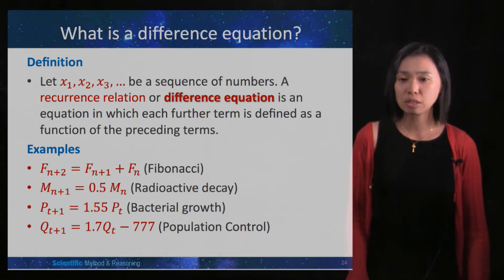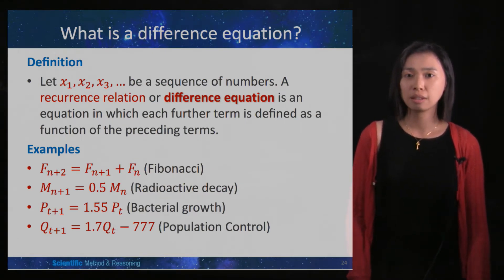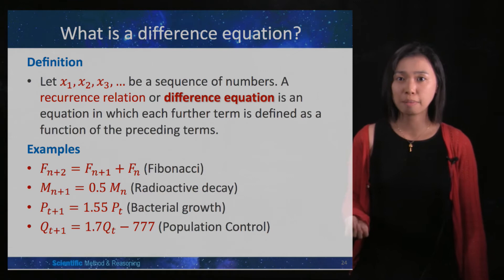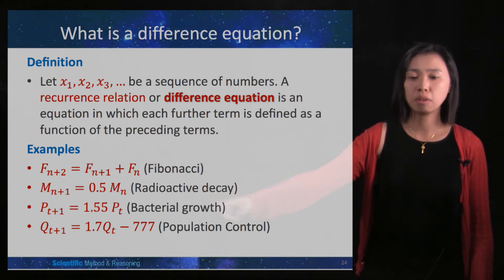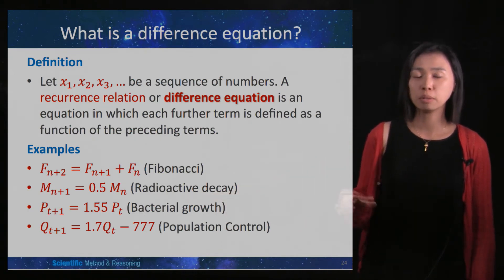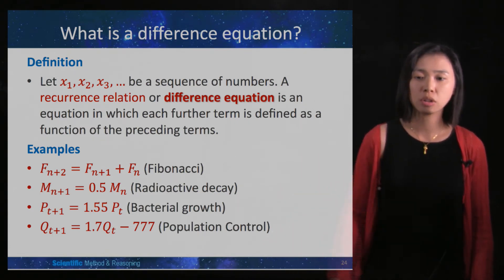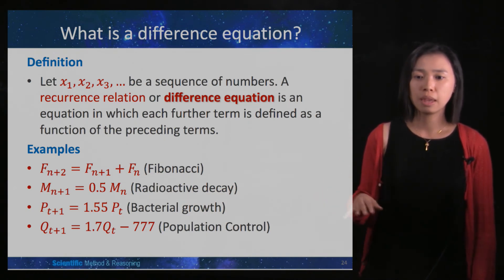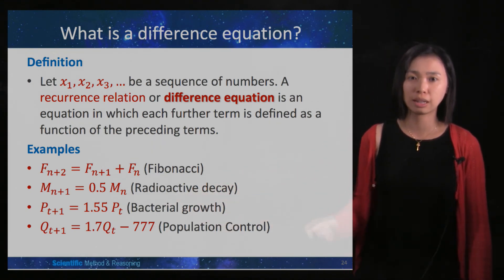For example, in the Fibonacci sequence, the next term fn+2 is equal to the sum of the previous two terms. In radioactive decay, the amount of radioactive substance right now, mn, multiplied by one half, gives the amount in the next half-life. For bacterial growth, the population you have right now multiplied by the growth rate will be the population in the next timestamp. In population control, Qt is the population of cougars; multiply by the growth rate and then subtract the number of cougars being killed to get the population in the next timestamp.